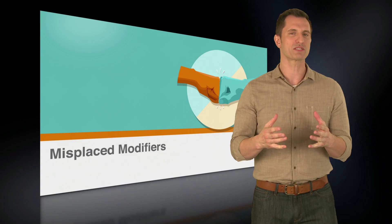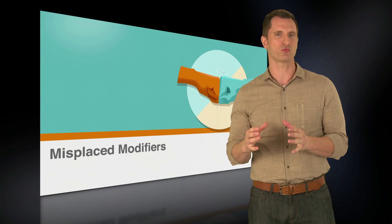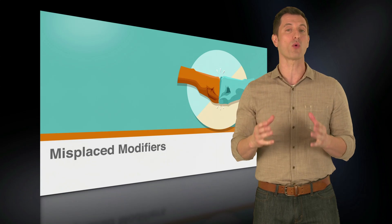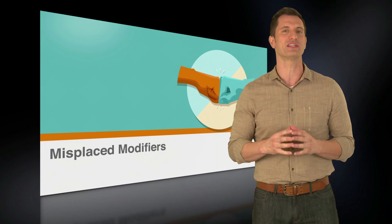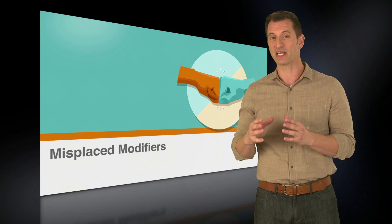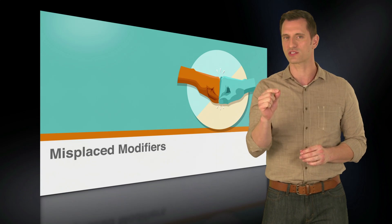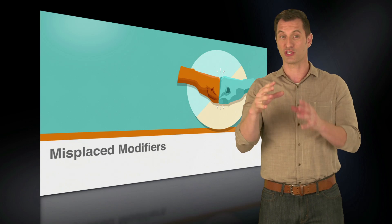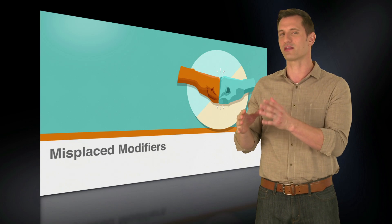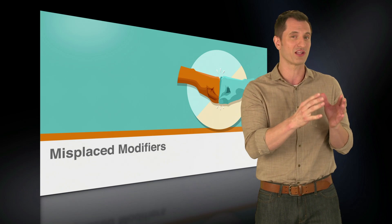Working with misplaced modifiers is tricky because we use them so often in our everyday speech. When you encounter a phrase with a modifier, read it closely to make sure just who's dressed like Copernicus or walking to the library.